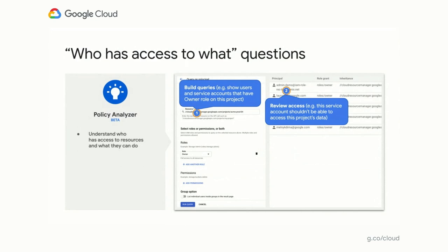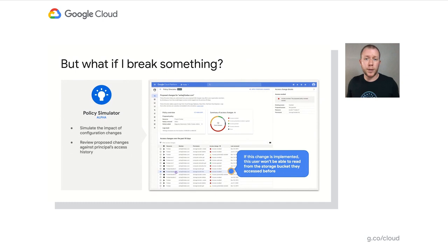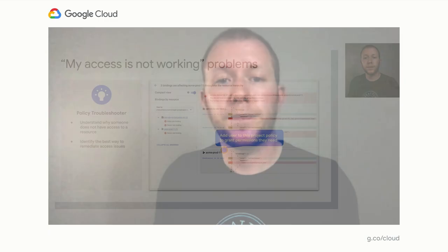But wait a minute — Steve sees a service account that is able to access the BigQuery dataset that it probably shouldn't. He wants to remove the service account access, but wants to make sure that he doesn't break anything in the process. With Policy Simulator, he can check the proposed policy changes against the 90-day access history to see if these changes would block any essential access which was previously used. And just as Steve wraps up with Policy Simulator, he has someone come to him with a dreaded 'I'm getting a denied error' problem. These seemingly simple issues can be surprisingly hard to troubleshoot — they could be caused by a lack of a certain permission, group membership, or a combination of IAM and network policies causing the denial. So Steve is relieved to be able to use the policy troubleshooter tool to confirm that this particular user never had any access granted to them in the first place. He adds them to a group which provides just the right amount of access they need to do their job.